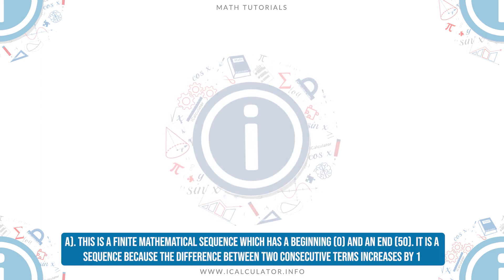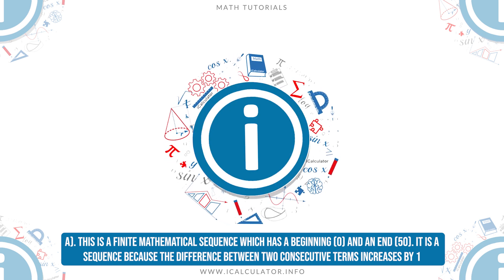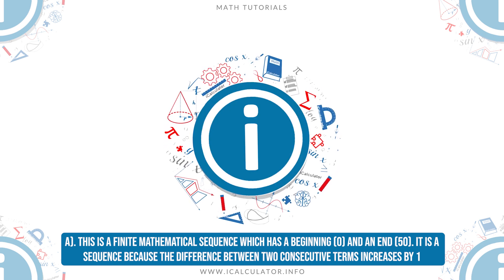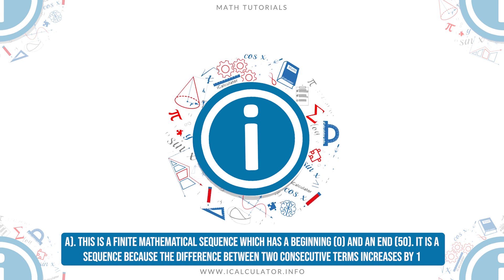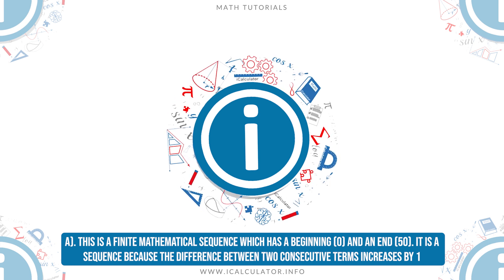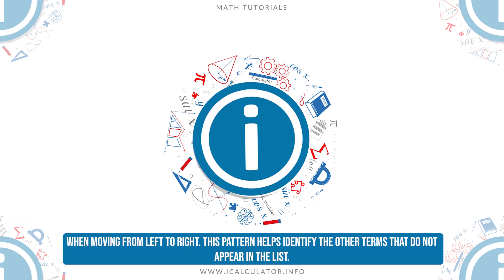Solution A: This is a finite mathematical sequence which has a beginning, 0, and an end, 50. It is a sequence because the difference between two consecutive terms increases by one when moving from left to right.